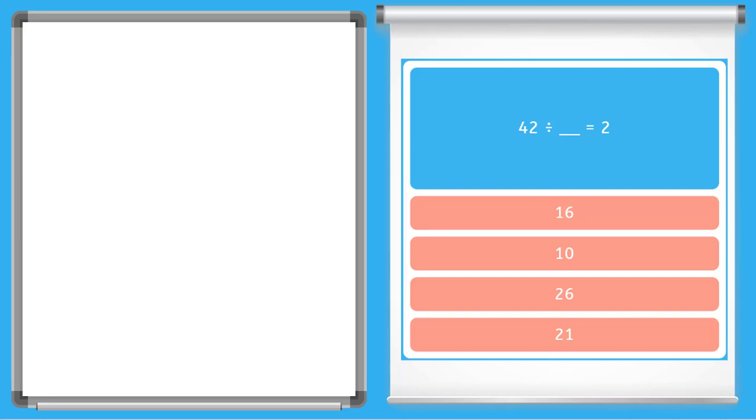Okay, my next one here is 42 ÷ unknown = 2. I will switch these around. I have 42 ÷ 2 equals my unknown. Now this number here is a little bit bigger than the facts I have memorized, so I will divide this using the division house.